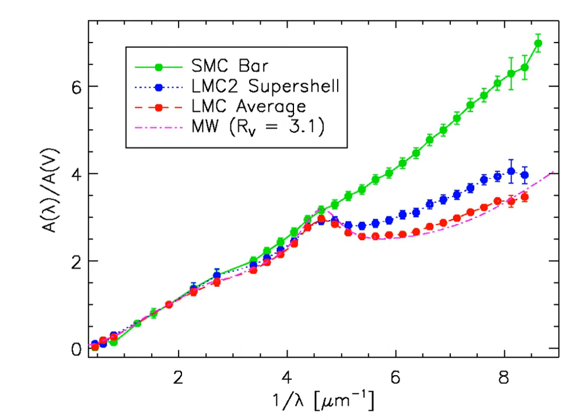To measure the extinction curve for a star, the star's spectrum is compared to the observed spectrum of a similar star known not to be affected by extinction. It is also possible to use a theoretical spectrum instead of the observed spectrum for the comparison, but this is less common. In the case of emission nebulae, it is common to look at the ratio of two emission lines which should not be affected by the temperature and density in the nebula. For example, the ratio of hydrogen alpha to hydrogen beta emission is always around 2.85 under a wide range of conditions prevailing in nebulae. A ratio other than 2.85 must therefore be due to extinction, and the amount of extinction can thus be calculated.